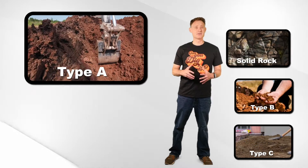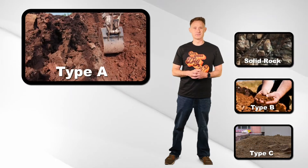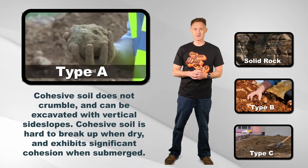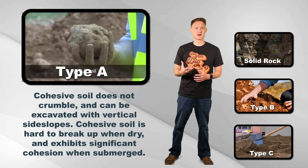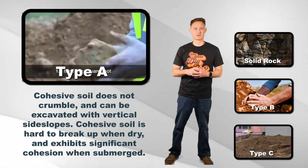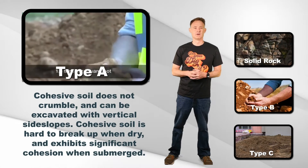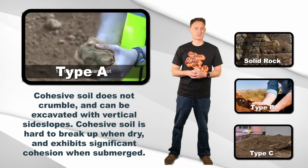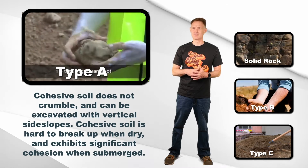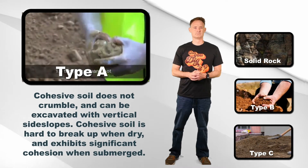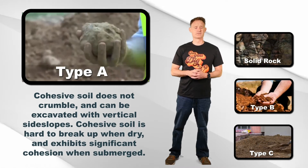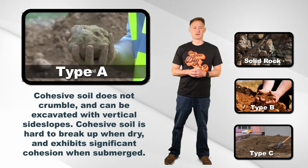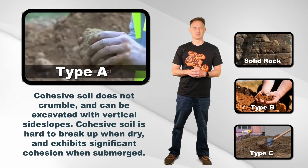Type A soil is strong cohesive soil. Cohesive soil is usually clay or soil with a large amount of clay content that has cohesive strength. Cohesive soil does not crumble — it can be excavated with vertical side slopes and it is plastic when wet. Cohesive soil is hard to break up when dry, and it also exhibits significant cohesion when submerged.